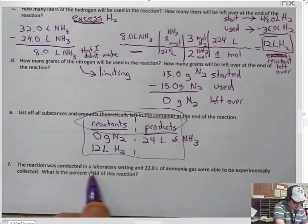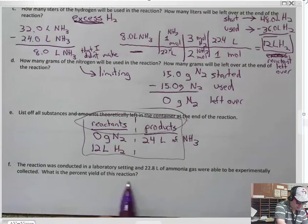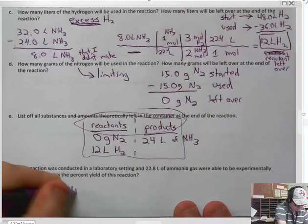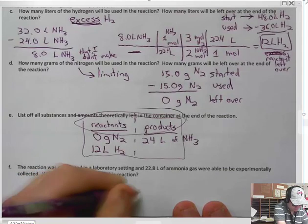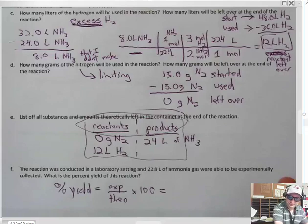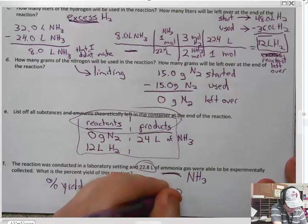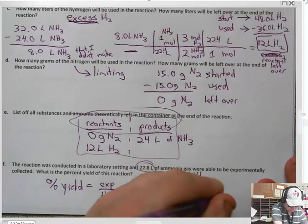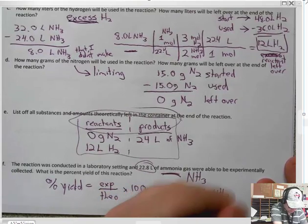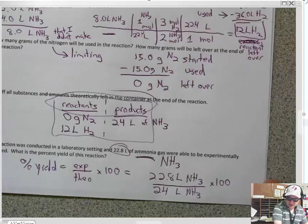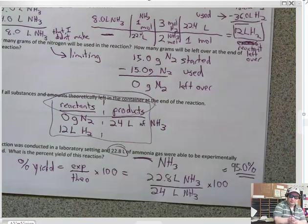In this reaction, the laboratory setting here at 22, we made 22.8 liters of ammonia gas and we're able to experimentally collect. What is the percent yield of this reaction? Remember, percent yield is equal to experimental over theoretical times 100. And here we're doing ammonia here, so this is NH3. So we made 22.8 liters of NH3. We were supposed to make 24 if everything went perfectly correct. Times 100. And you end up making 95.0% is the reaction yield.